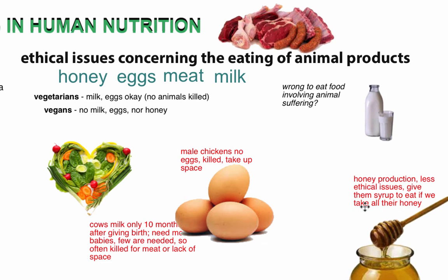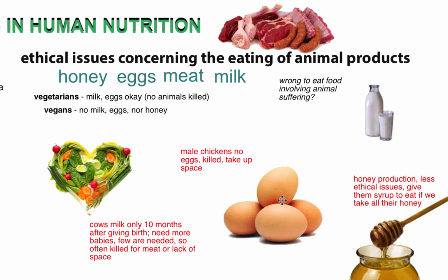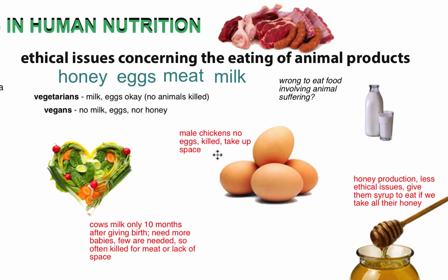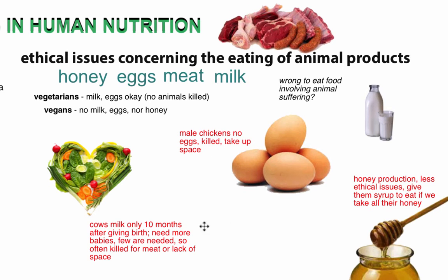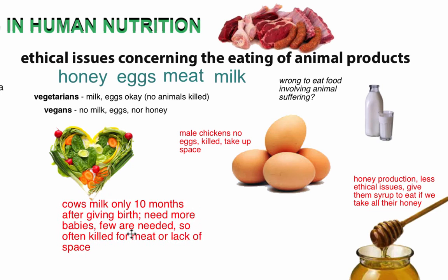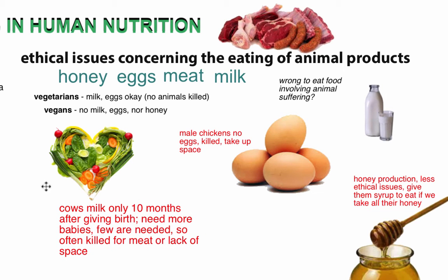Even though bees aren't really harmed much in honey production, vegans avoid it. If you study egg production in more detail, you find that male chickens can't lay eggs and there's limited space, so a lot of male chickens get killed to make room for female chickens. Similarly, cows are only productive for milk during the 10 months after giving birth, so they're constantly encouraged to get pregnant, and many of those calves either get killed for space or raised for meat.